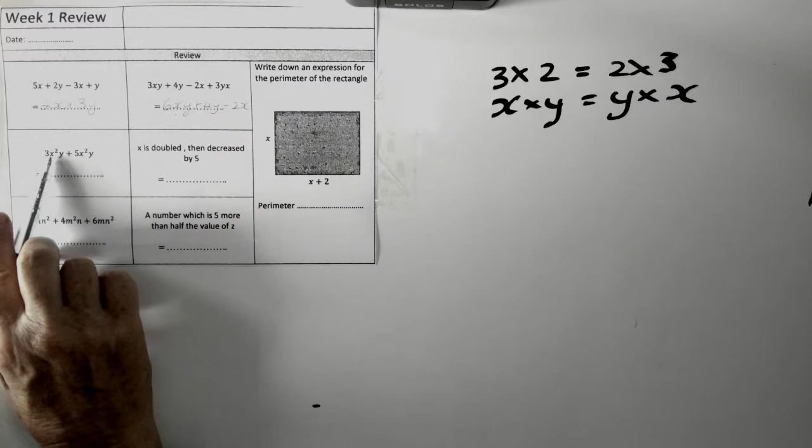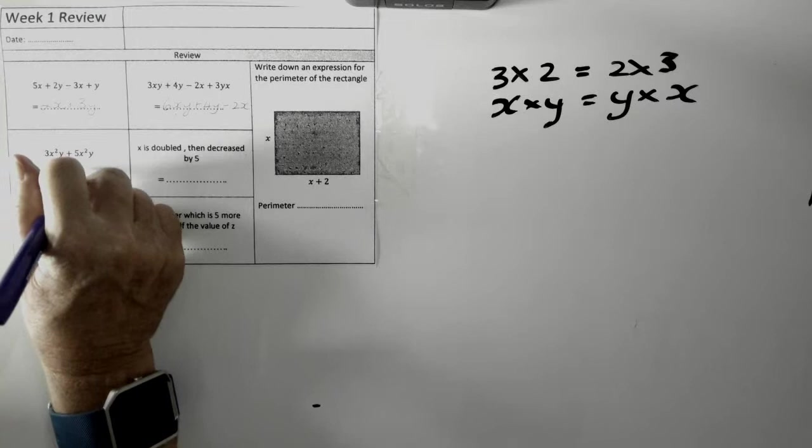The next one, I've got X squared Y, X squared Y. So, I can put them together. I've got three of them, and another five of them. So, I've got eight X squared Y.